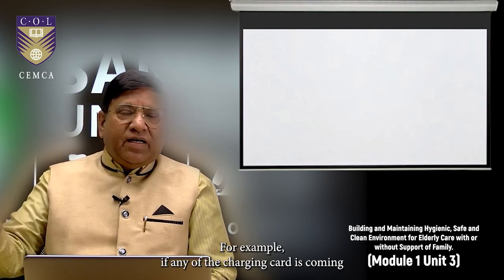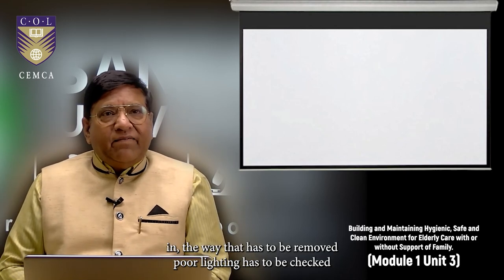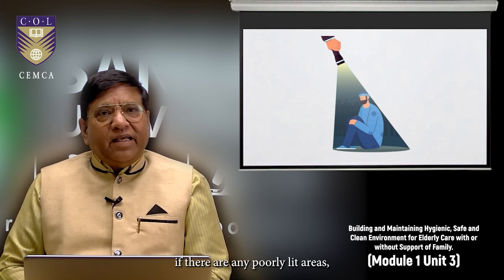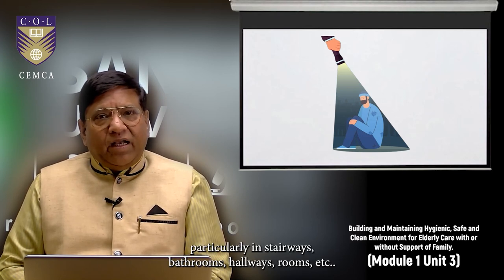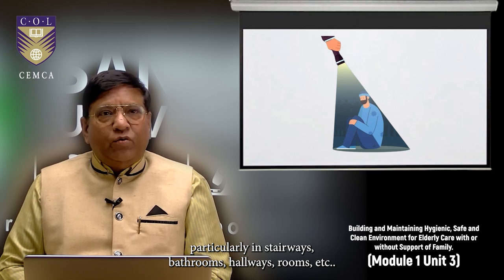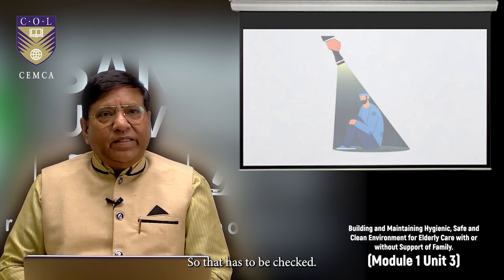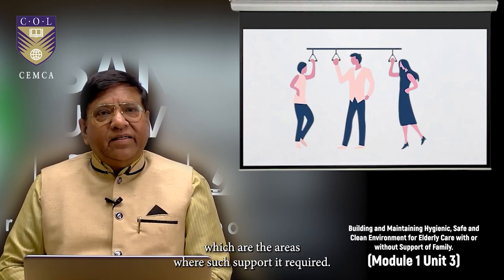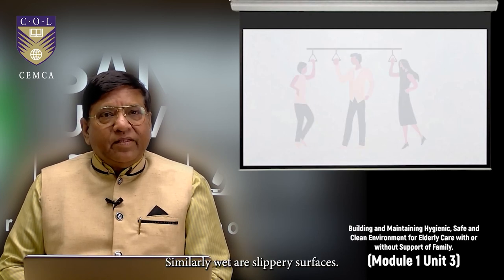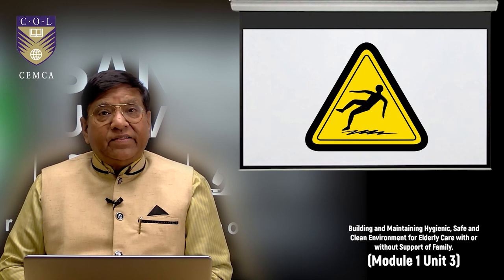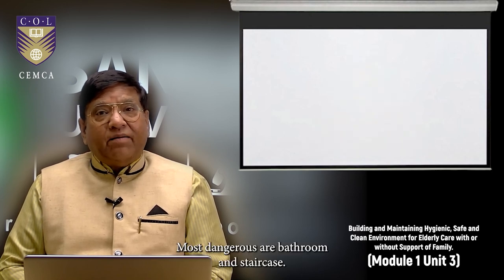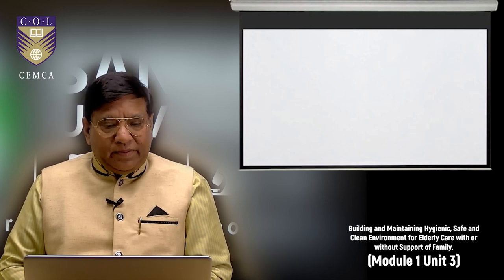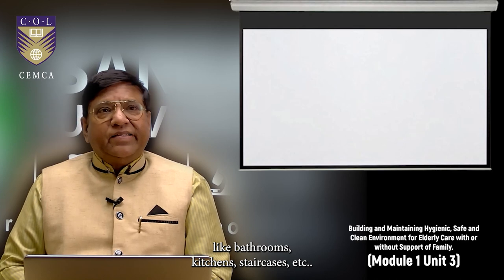For example, if any of the charging cord is coming in the way, that has to be removed. Poor lighting has to be checked. If there are any poorly lit areas, particularly stairways, bathrooms, hallways, rooms, that has to be checked. Lack of handrails or grab bars. Note which are the areas where such support is required but they are missing. Similarly, wet or slippery surfaces. Most dangerous are bathroom and staircase. Identify those areas which are prone to moisture buildup like bathrooms, kitchens, staircases.